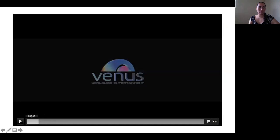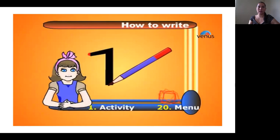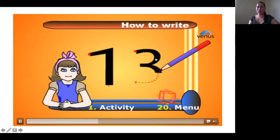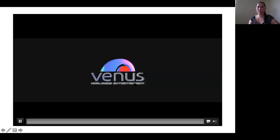A line. From here we start a line, all the way down. The three, we start from here, doing like a curve, and another one here. Very good.